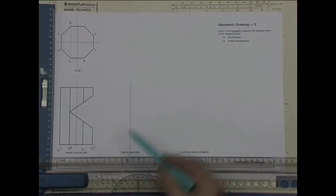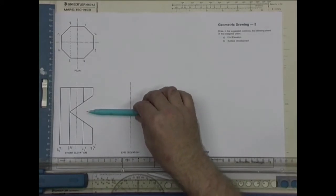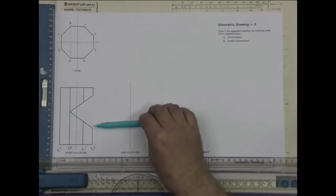And we're drawing the end view looking into the cut so it's nearest, so there would be no hidden detail in this view.